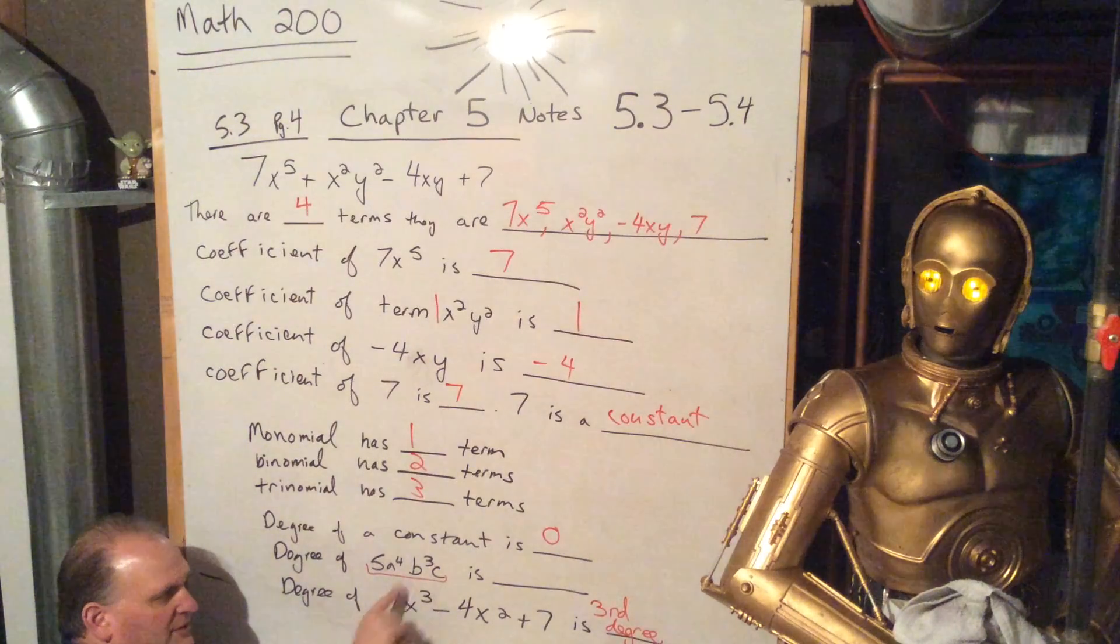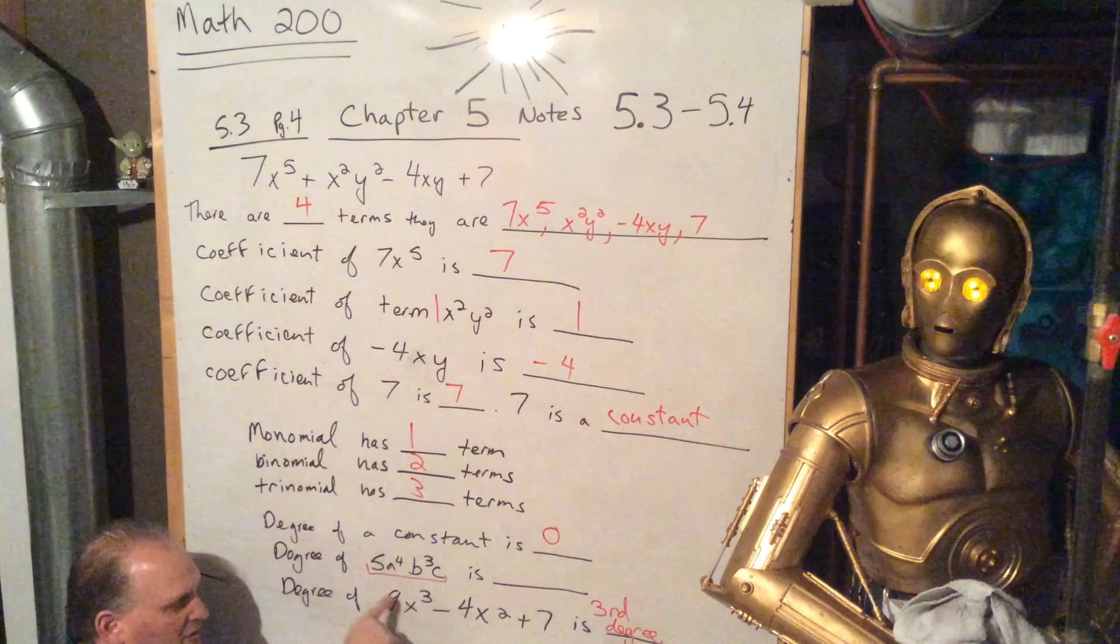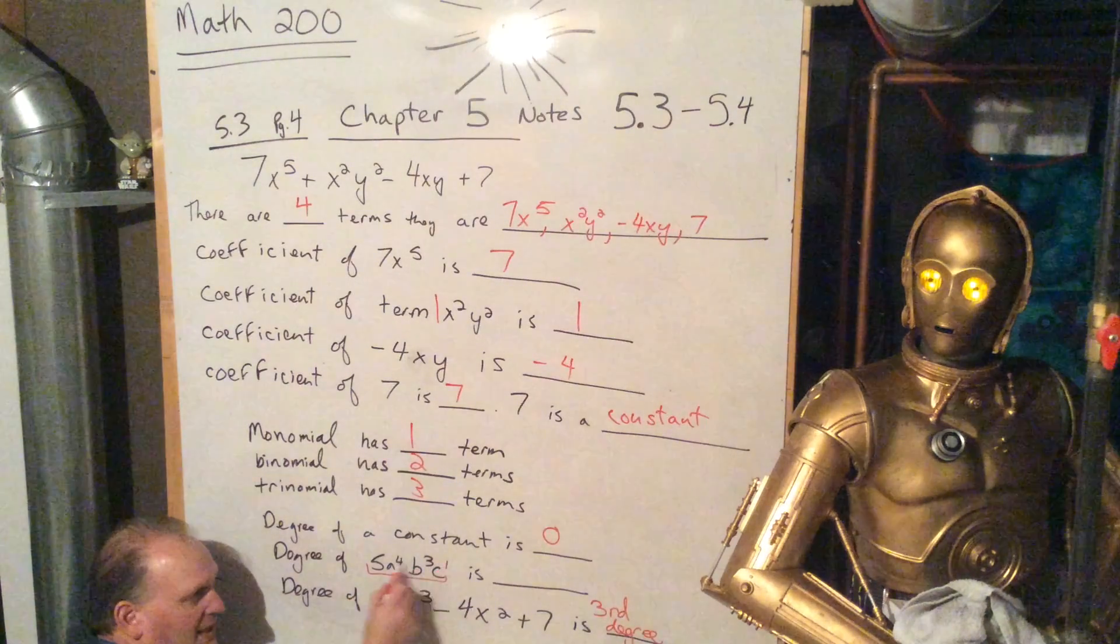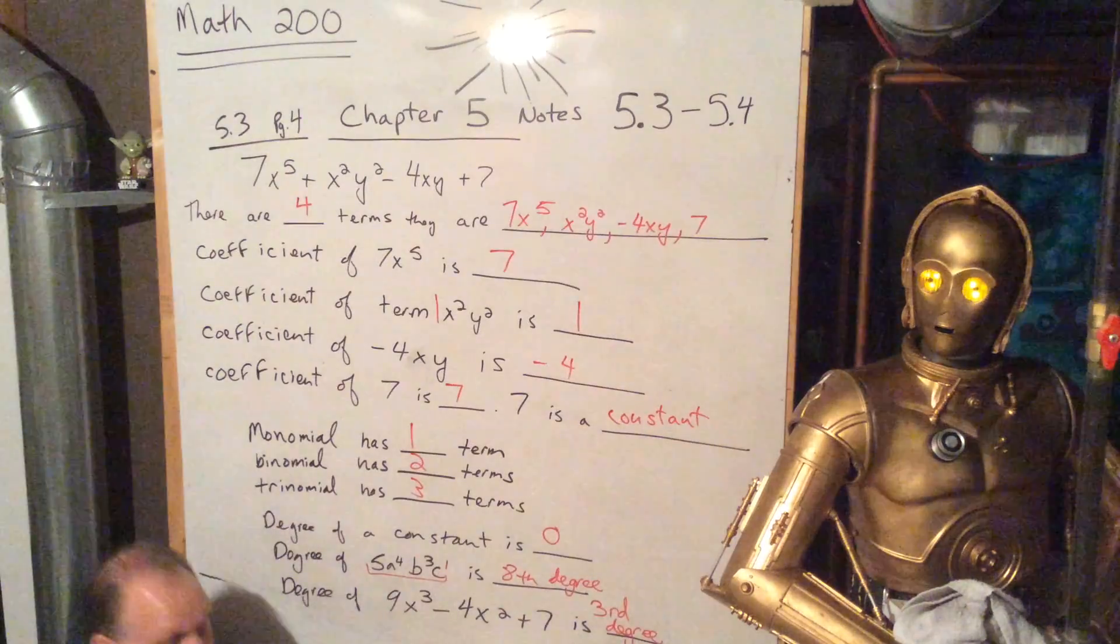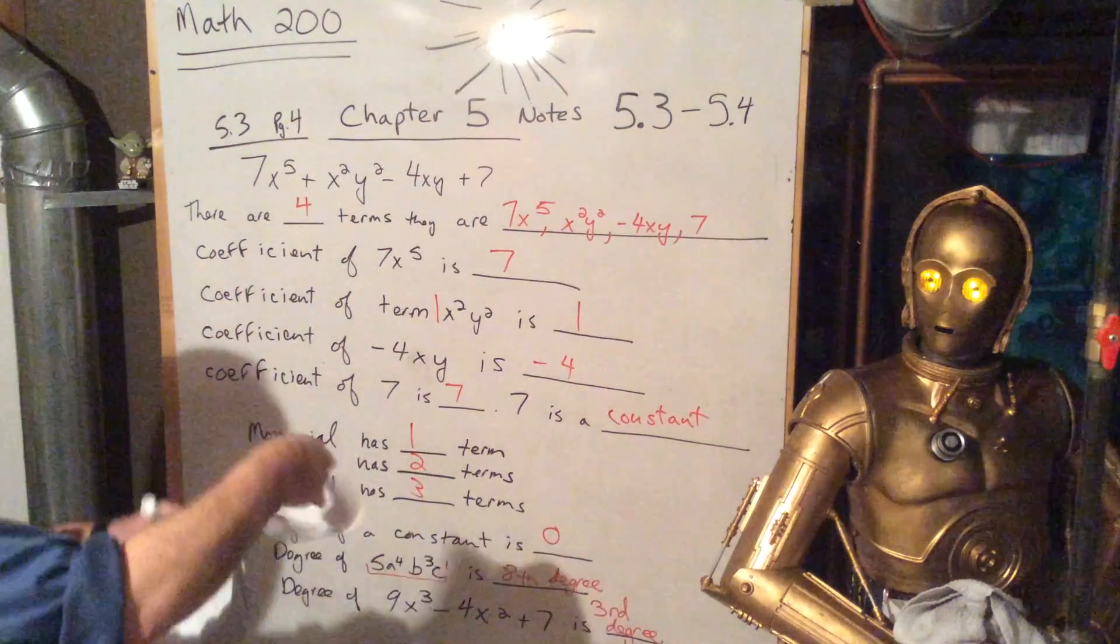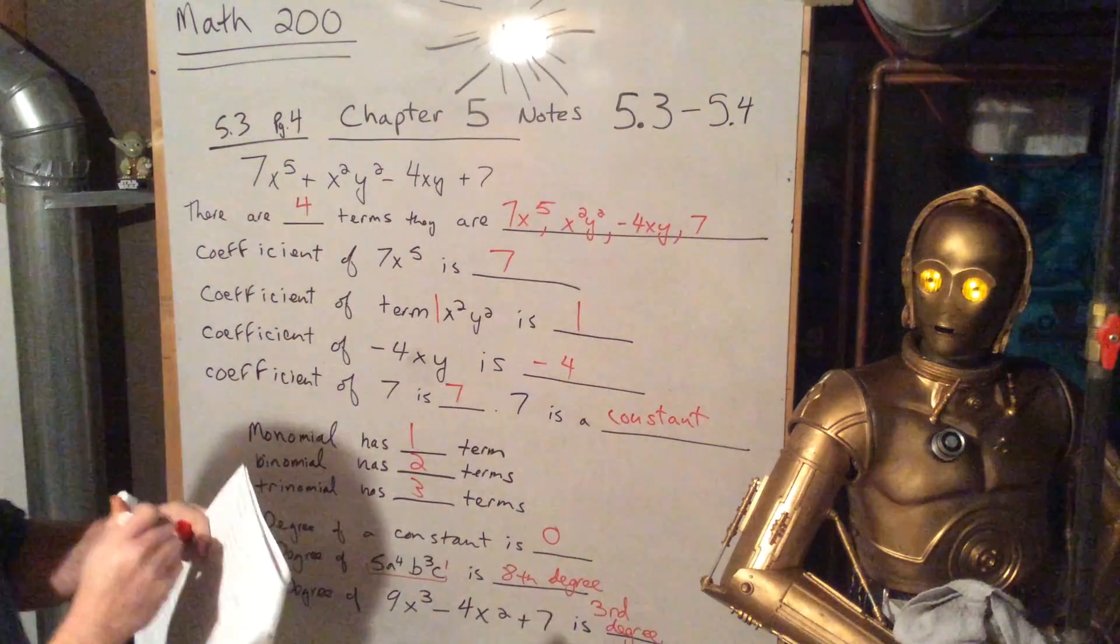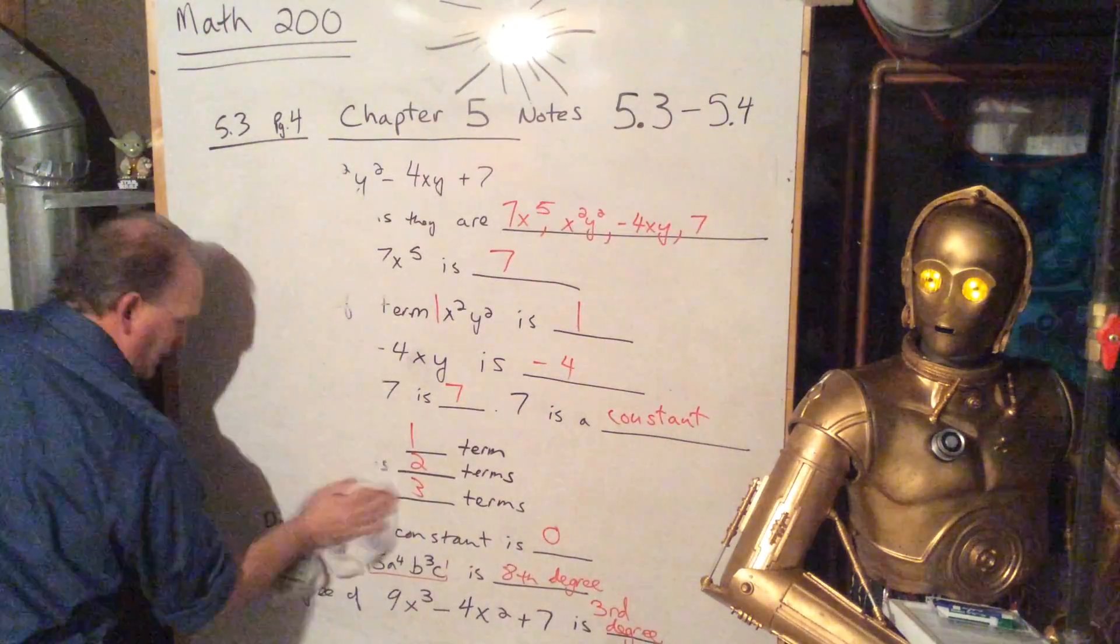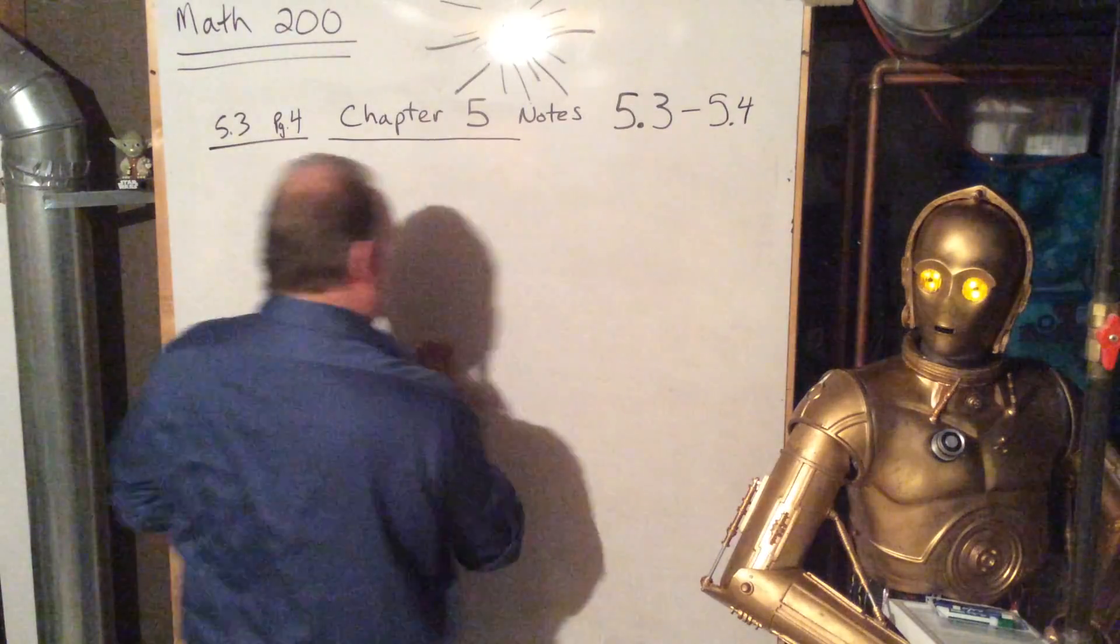This one is special because there's multiple variables in the same term. See, that's only got just x in it. That's just got x in it. This is normally what we're working with. This is a special case. There's multiple variables in the same term. So what we do with that is we take the 4 plus the 3 plus the 1, and we say that's an 8th degree monomial. And it's a monomial because there's only a single term there. All right. So let's see. We've got one more problem on the, two more problems on the bottom of this page. So we're still on page 4. Let's erase. I've got my little TA C3PO here. He holds my markers and my eraser.